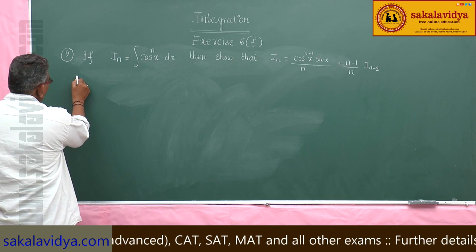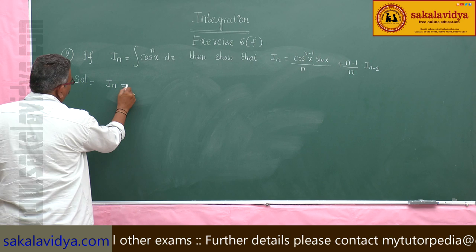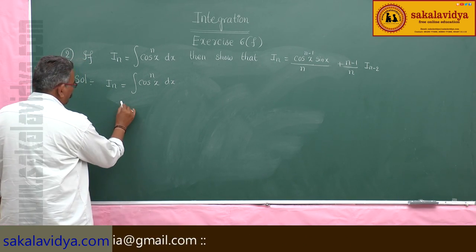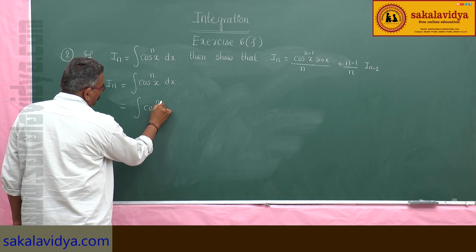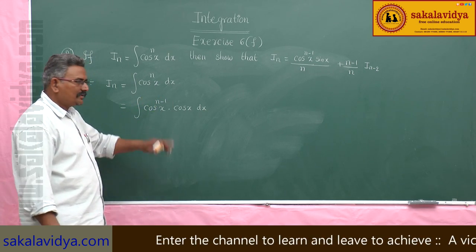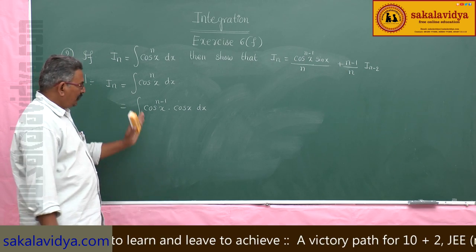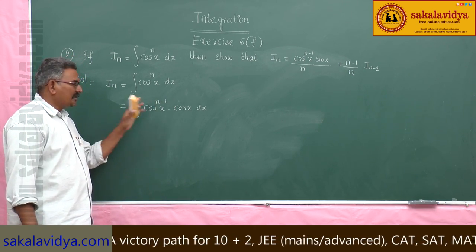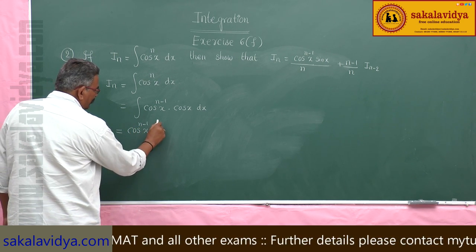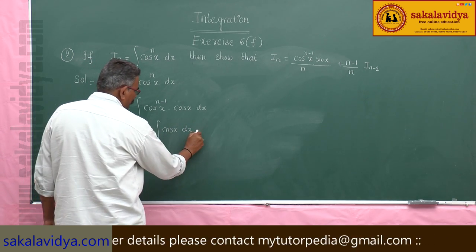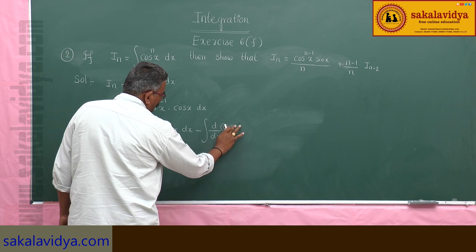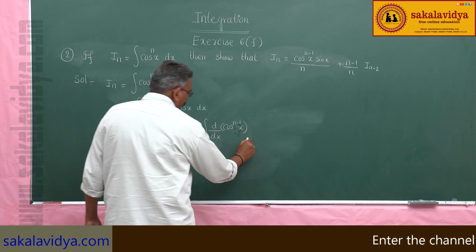So, the integral of cos x to the power of n dx is taken as I_n, and we have to derive the formula for I_n using the reduction formula. So I_n equals the integral of cos x to the power of n dx. This can be written as the integral of cos x to the power of n minus 1 times cos x dx — splitting it as the product of two functions. Now, in this case both are trigonometric functions; we take cos x to the power of n minus 1 as the first function. Applying integration by parts: cos x to the power of n minus 1 times the integral of cos x dx, minus the integral of d by dx of cos x to the power of n minus 1.